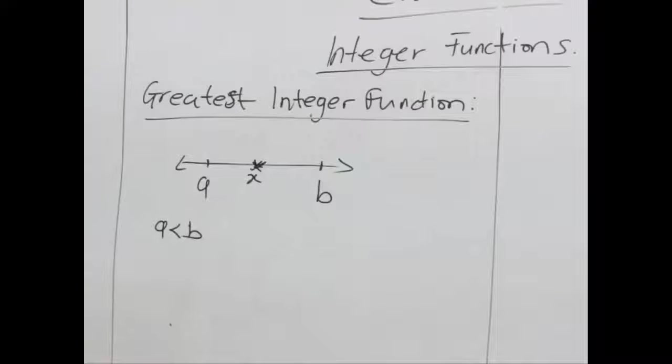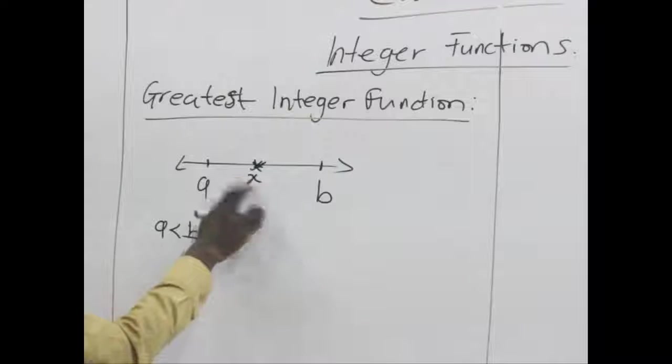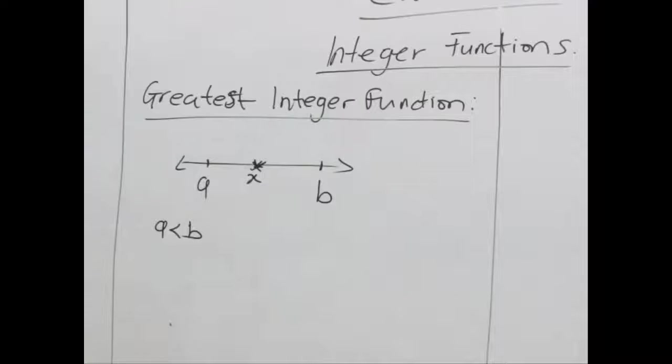Now the greatest integer function is the least whole number that is greater than the number which we are dealing with. Or in other words, we say the greatest integer function deals with the greatest integer or the greatest number which is actually less or equal to x.